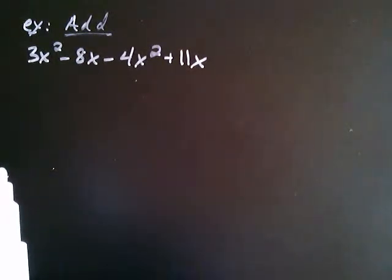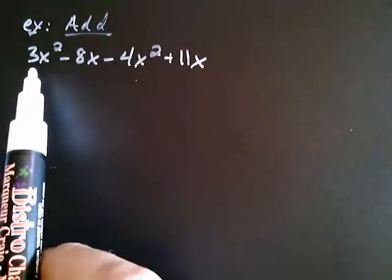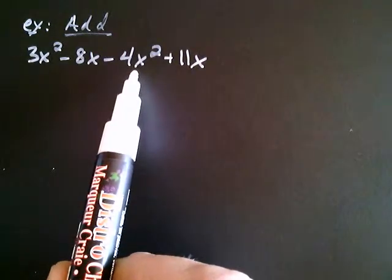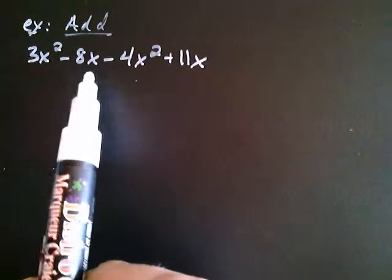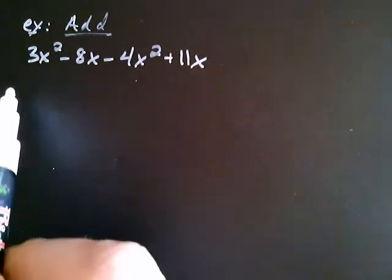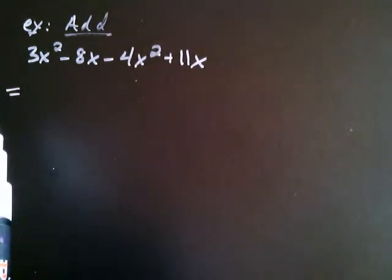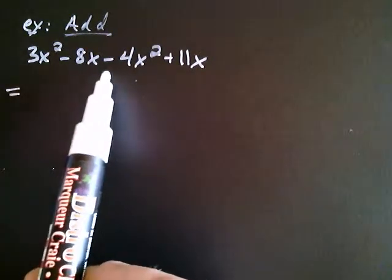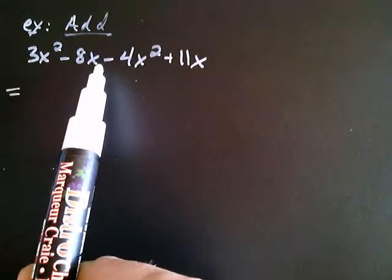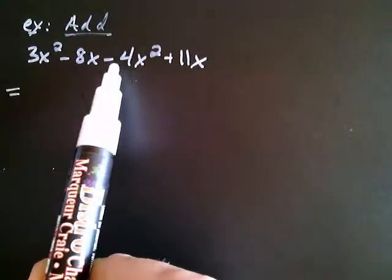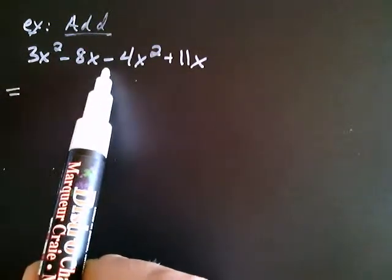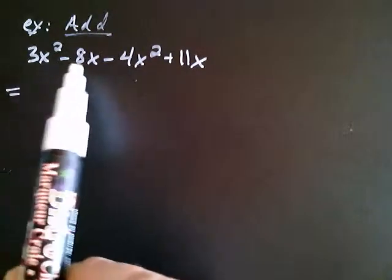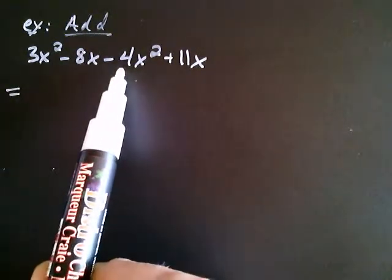The first thing I notice is that two of the terms — the 3x squared and the negative 4x squared — are like terms because they both have x raised to the second power. And likewise, the negative 8x is like the 11x. The way you combine like terms is by adding their coefficients. Let's work with the x squareds first. The coefficient here is a 3, and the coefficient here is a negative 4. So combining the 3 and the negative 4, because those are like terms: 3 plus negative 4 is negative 1.